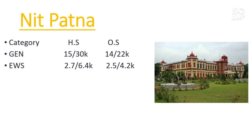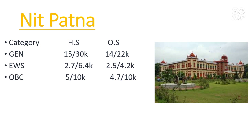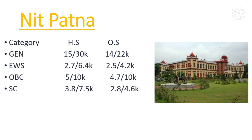In this video I am considering NITs that have a home state cutoff above three lakh, meaning you can get into these NITs even with lower marks — so don't worry if your score is low, better counseling can help. For OBC other state: male 4,700, female 10,000. For SC other state: male 2,800, female 4,600. Home state figures are listed on the side. For ST: 1,500, no seat for female.